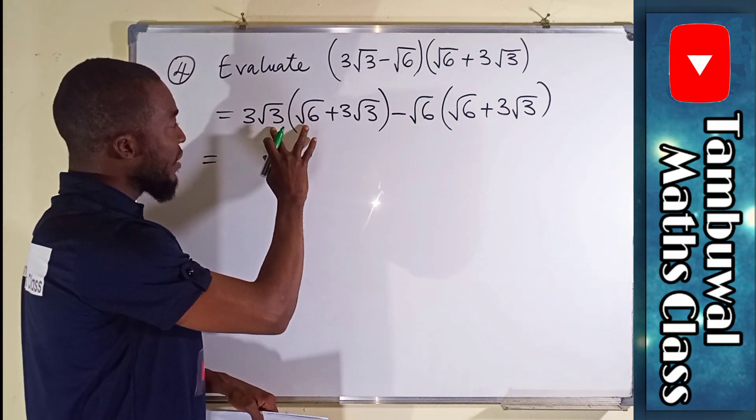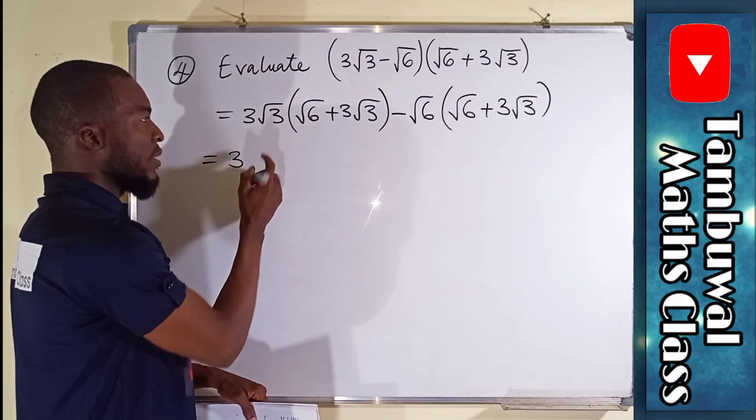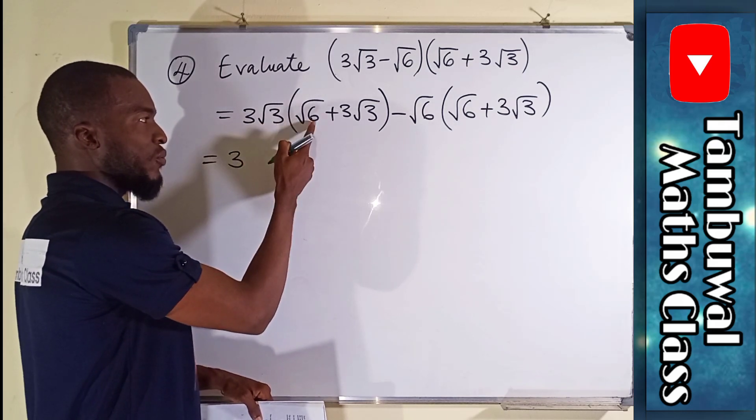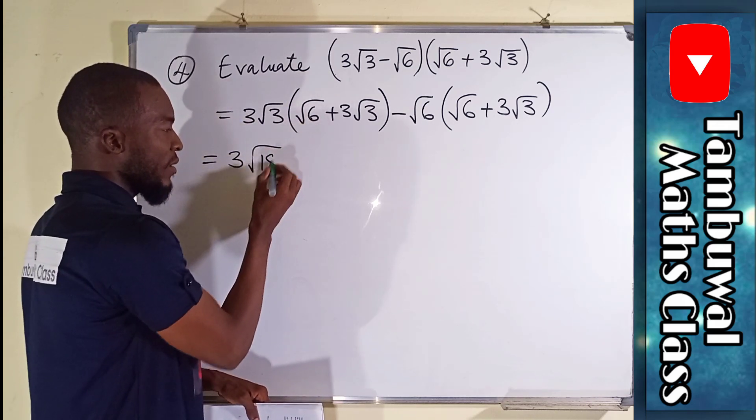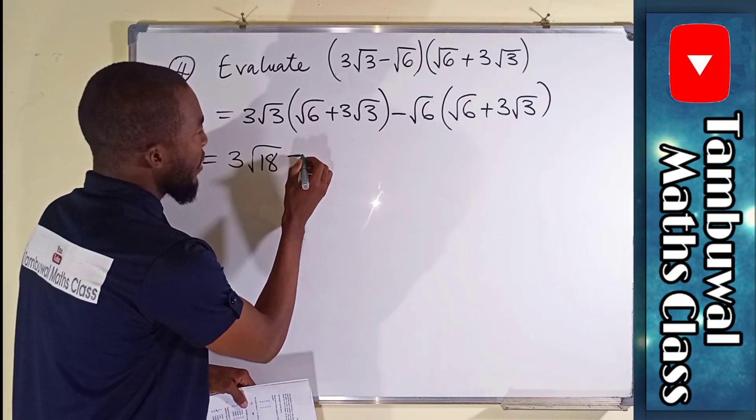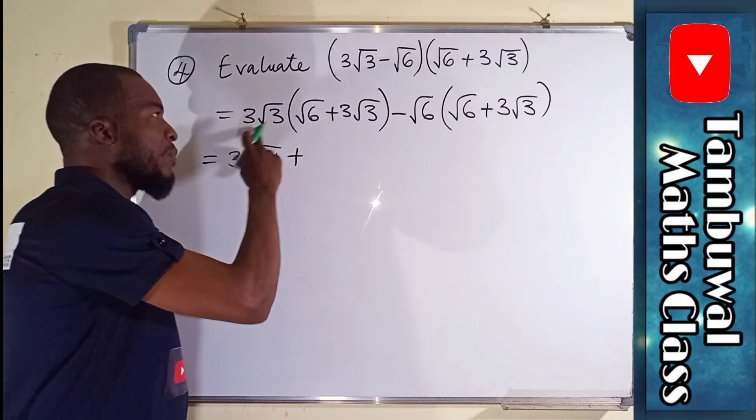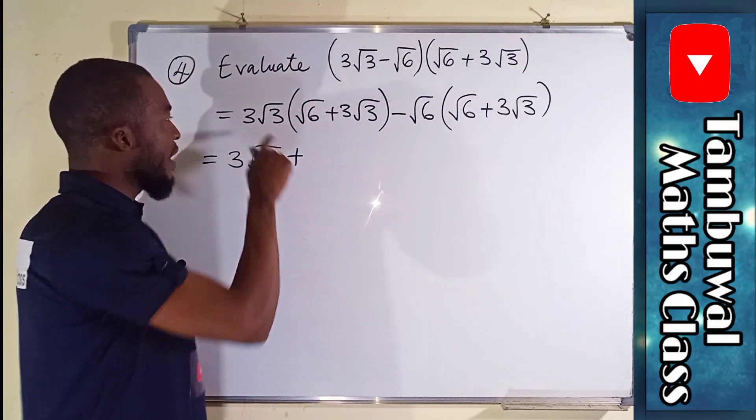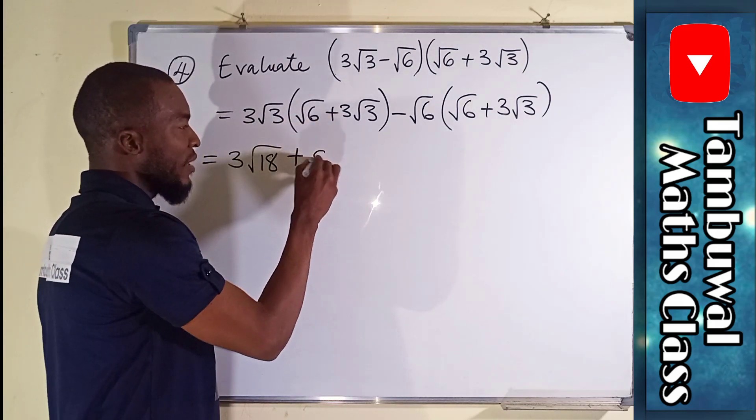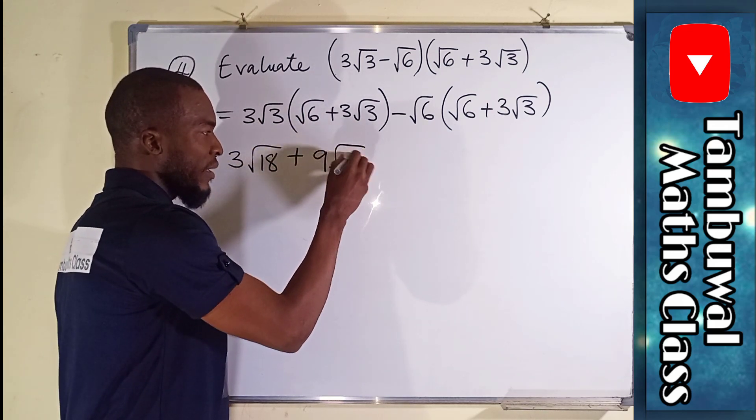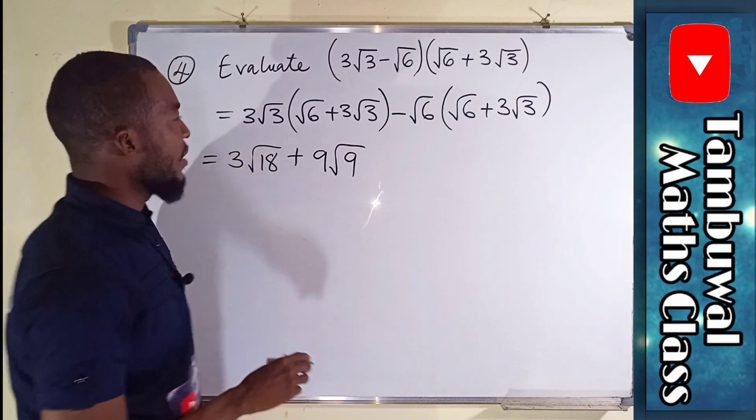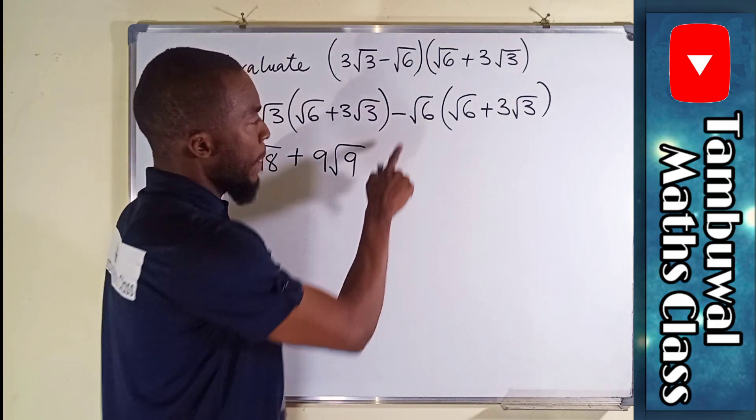Roots can multiply themselves, so we have 3√3 times √6 equals 3√18. We multiply numbers by numbers and surds by surds. Therefore, 3 times 3 is 9, and √3 times √3 is √9 because 3 times 3 is 9. Then we move to the next one, minus...